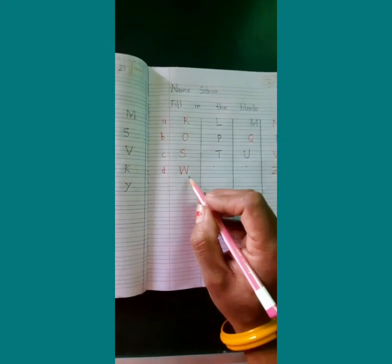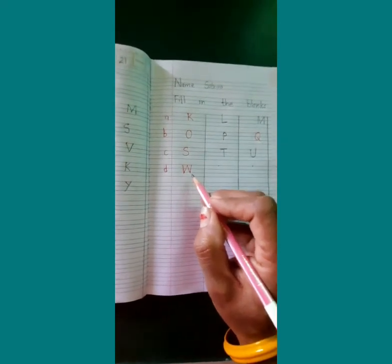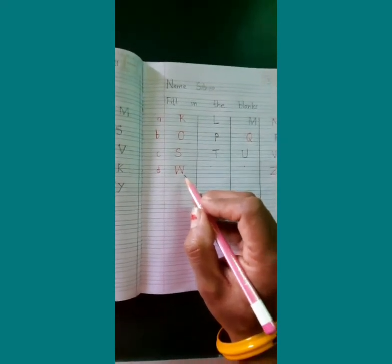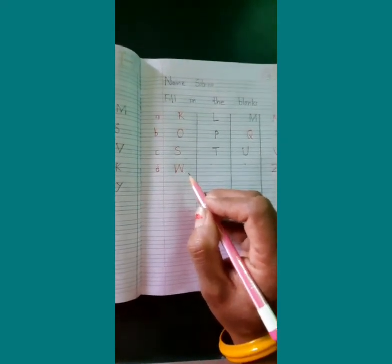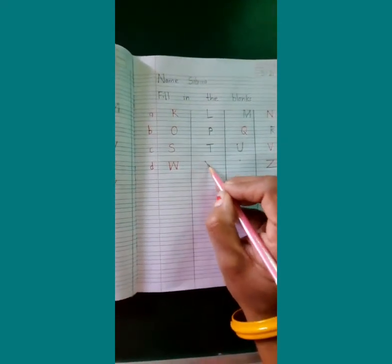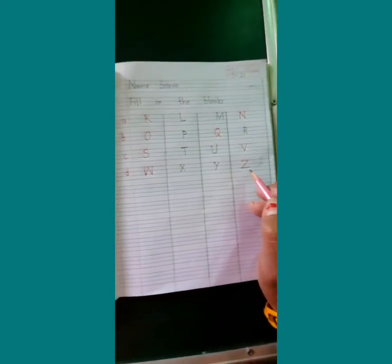Now we will come to the next line. W. After W children, X. After X children, Y. Now Z is written here children.